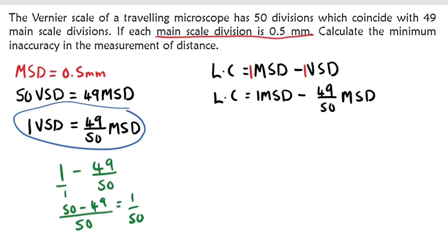Since we're getting 1 over 50, it means that our least count is 1 over 50 main scale divisions. Now we are looking for the minimum inaccuracy.